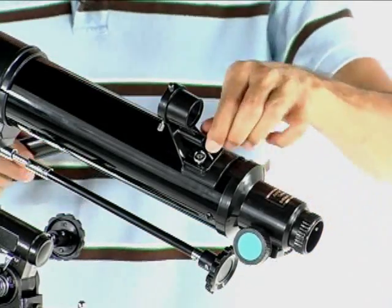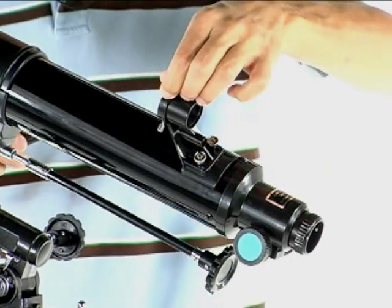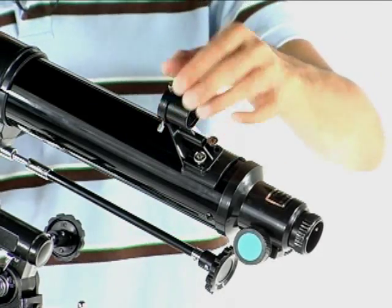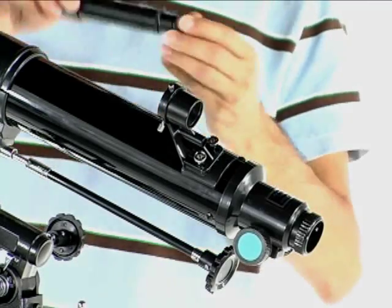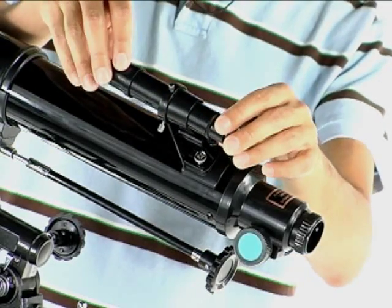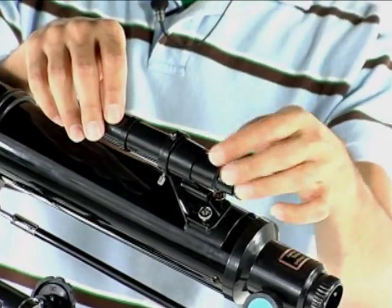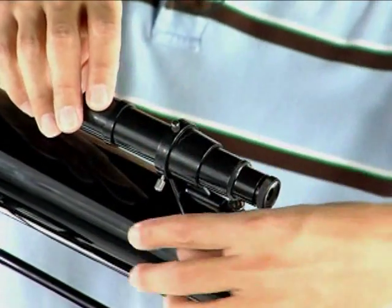Alright, now once that's in, make sure you loosen up your little screws on the top here so that way you can put your finder scope in. And it just slides in. And this doesn't have to be perfect because you're going to actually adjust this ever so slightly once you align your telescope.